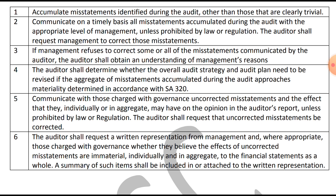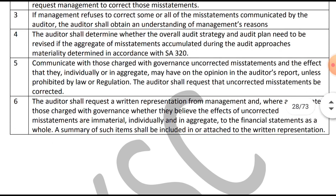The fifth point is to communicate with those charged with governance the uncorrected misstatements and the effect they may individually or in aggregate have on the opinion in the auditor's report, unless prohibited by law or regulation. The auditor should explain the effect of the uncorrected misstatements that could have on the opinion in the audit report to those charged with governance and management.